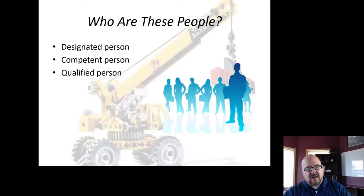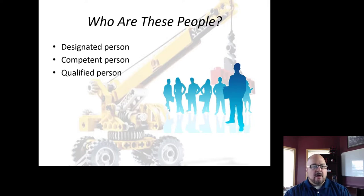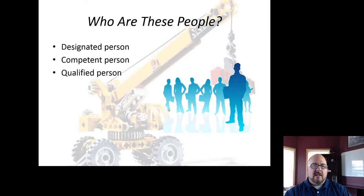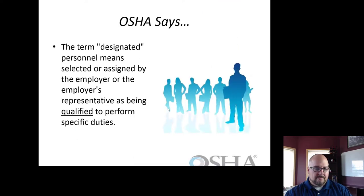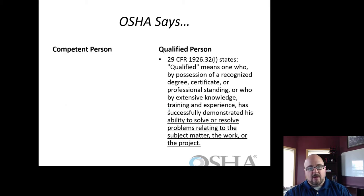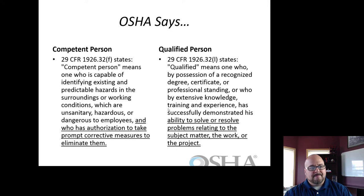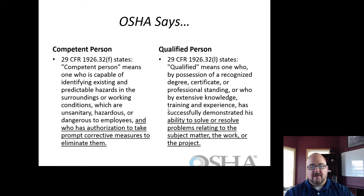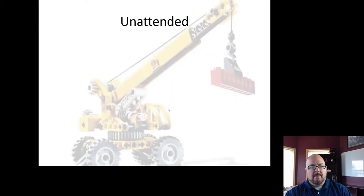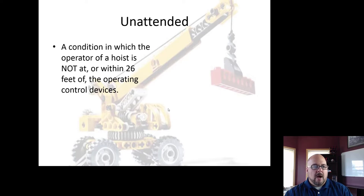There are different personnel definitions. A qualified person is typically the most trained and is overseeing the lift. A competent person has received some training and can basically work on the lift. A designated person is really a standby or spotter. More formally, competent means capable of identifying hazards, while qualified means someone who possesses a recognized degree or certificate. The condition called 'unattended' refers to when the operator of a hoist is not at or within 16 feet of the operating control device.